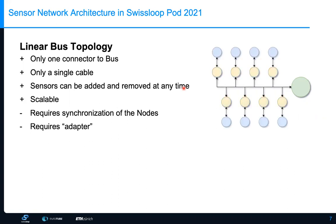Another downside is that you require an adapter for each sensor. In a star topology you can connect every sensor directly, but in a linear bus topology you need an adapter if sensors are not compatible with each other — for example, not every sensor has the same supply voltage or produces the same data format. Some sensors produce an analog signal like current or voltage output, while others have a digital interface. To put everything on the same bus you need a common communication protocol.